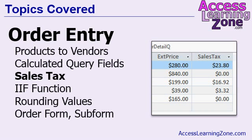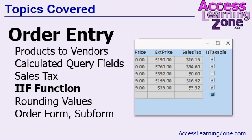We're going to learn how to calculate sales tax for each of our line items. We're going to learn a new function called the IIF function — immediate IF — which allows us to perform an IF-then conditional expression inside of our queries. We'll use that to say: if this item is not taxable, like a gallon of milk, then don't charge sales tax.